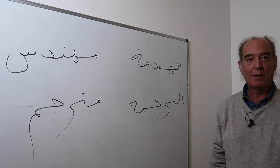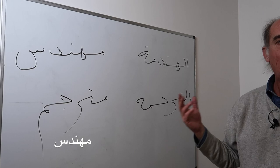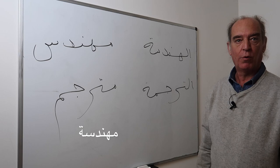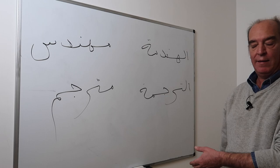If you have studied engineering, 'fa-anta muhandis' — you are an engineer. You can say 'Ana muhandisun' — I'm an engineer. If you're a woman, you say 'muhandisah' or 'muhandisatun' — with ta' marbuta. Similarly for translation, you would be a translator — 'mutarjim' or 'mutarjimah' for a woman.